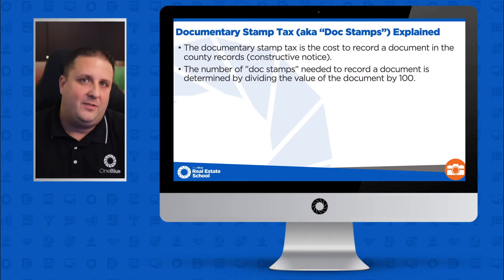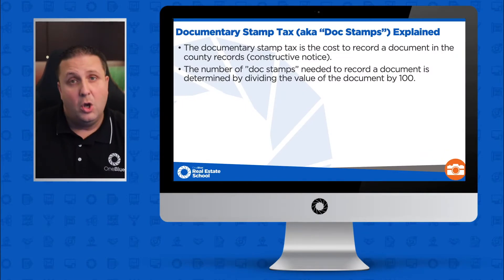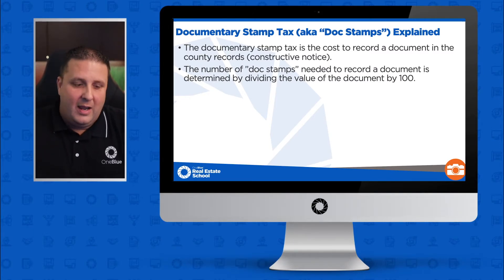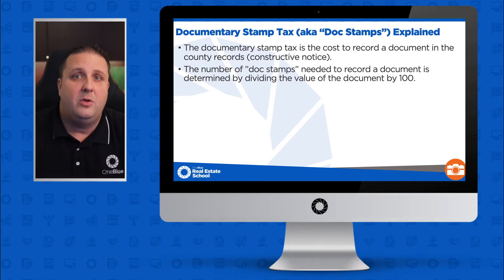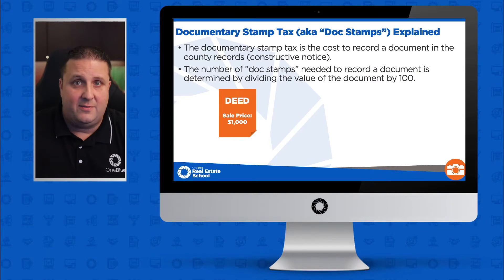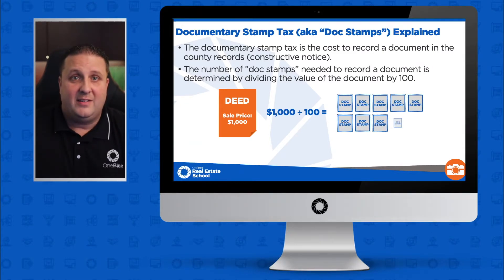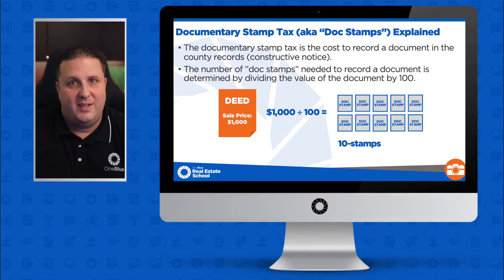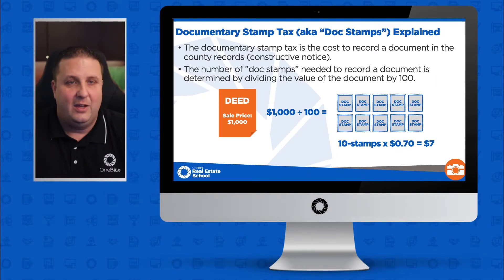So first, before we dive into the details, let's talk about what a documentary stamp tax is — or as we commonly call them, doc stamps. Anytime property is transferred from the seller to the buyer, we have to record certain documents in the county records. The one that always gets recorded is the deed. We determine how much the tax is going to be based on the value of the document. We divide by 100 to get the number of stamps. For a property sold for $1,000, divide by 100 gives us 10 stamps. Each doc stamp for the deed is 70 cents, so 10 stamps times $0.70 gives us a total tax of $7.